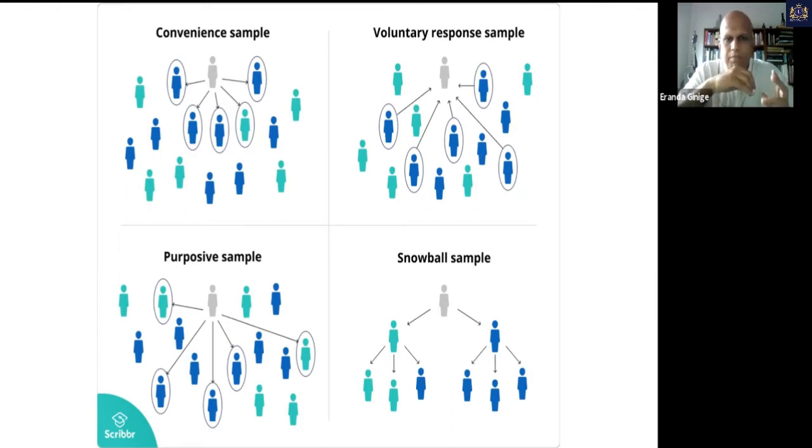The other one is purposive sampling. You purposely select people. It is your judgment. You say, for this research, I need to interview that particular person, that particular professor, that particular business leader, that particular consumer. Based on your purpose, you will pick people.